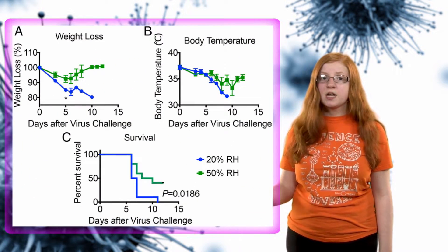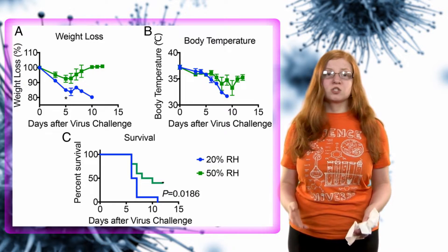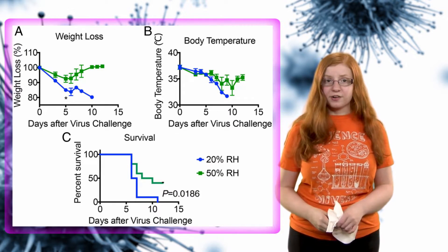The mice were in all the same temperature, but some were in containers with high humidity, and some with low humidity. Then they were exposed to the influenza A virus. The mice that did well were kept at about 50% humidity. The mice that showed all these effects in their immune system were at 10-20% humidity.